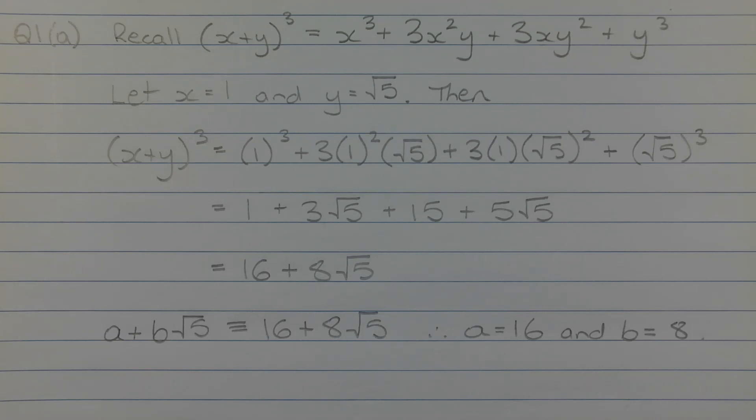So the expansion of 1 plus the square root of 5 in brackets to the power of 3, written in the form a plus b root 5, where a and b are integers, is 16 plus 8 root 5.